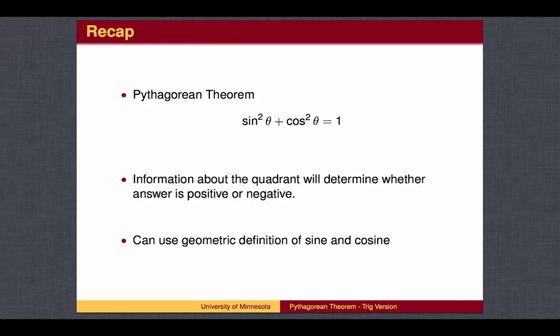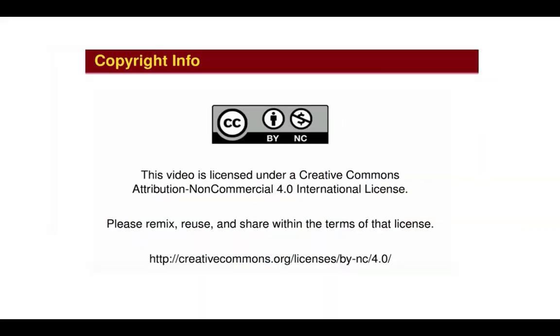To recap, on the unit circle, the Pythagorean Theorem becomes sine squared theta plus cosine squared theta equals 1. Given the value of either sine or cosine, you can find the other from the Pythagorean Theorem, except that you will get two answers, one positive, one negative. Information about the quadrant will allow you to determine whether the correct answer is positive or negative.